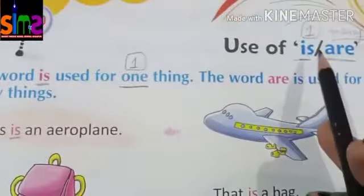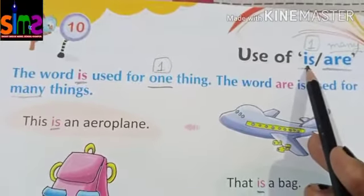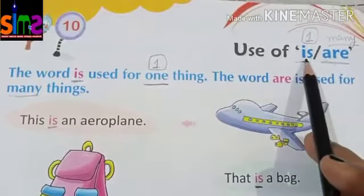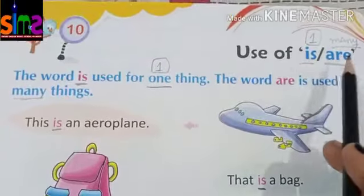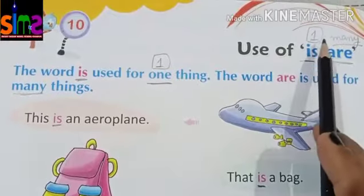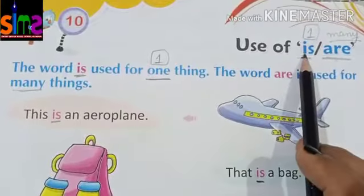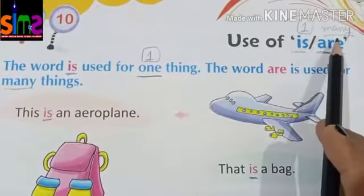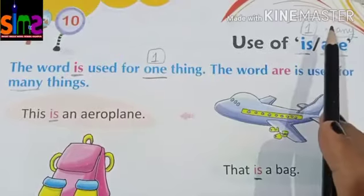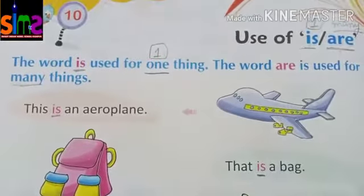So once again we will revise: the word 'is' is used for one thing, and the word 'are' is used for many things. Only one thing — use 'is'. Many things — use 'are'. I hope you all have understood the use of 'is' or 'are'. Thank you, kids.